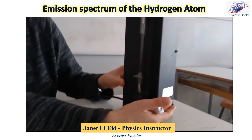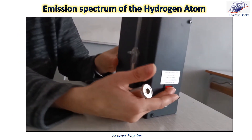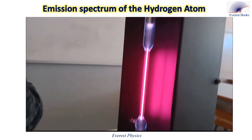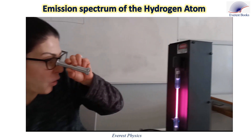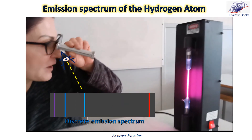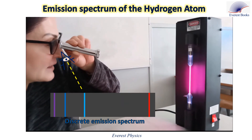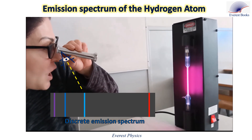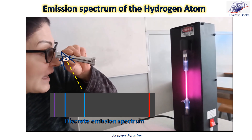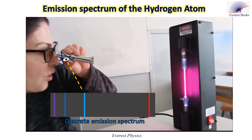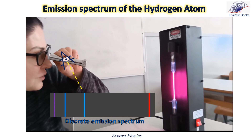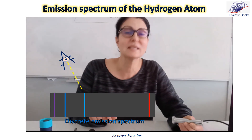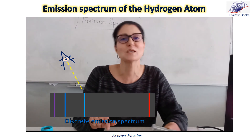Here is a gas discharge lamp — it is a hydrogen gas tube. What do we observe when we let the light from the hydrogen gas pass through the slit of our spectroscope? We observe discrete bright lines on a dark background. This emission spectrum is called a discrete or discontinuous emission spectrum.